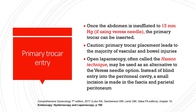Once the abdomen is insufflated to 15 mmHg using a Veress needle, the primary trocar can be inserted. An intraperitoneal pressure of less than 10 mmHg is a reliable indicator of correct intraperitoneal needle placement. Primary trocar placement leads to the majority of vascular and bowel injuries, so be very careful when inserting the trocars. Open laparoscopy, often called the Hasson technique, can be used as an alternative: instead of blind entry, a small incision is made over the lower umbilical area down to the fascia and parietal peritoneum, and then the primary trocar is inserted.